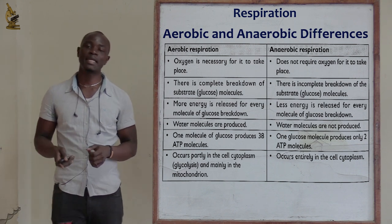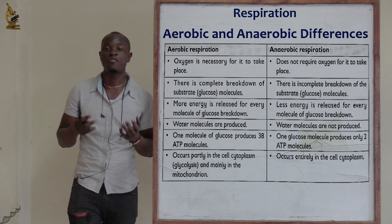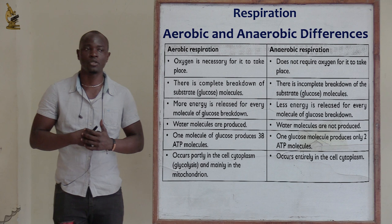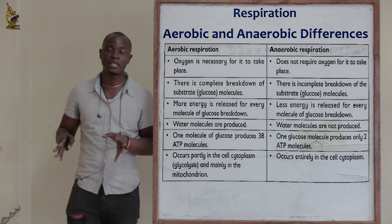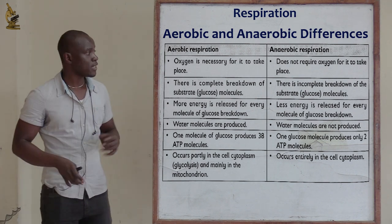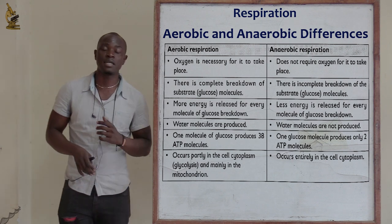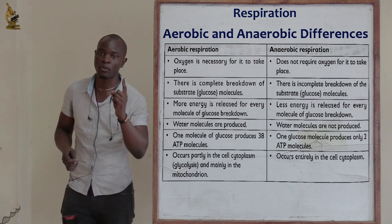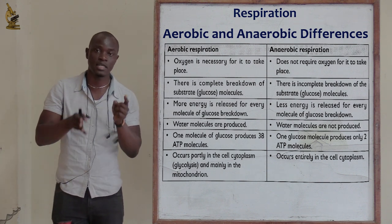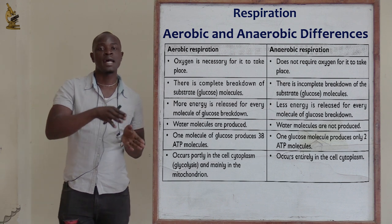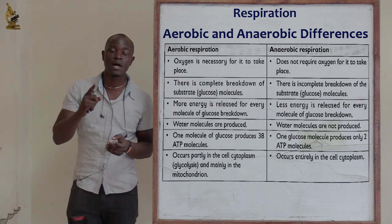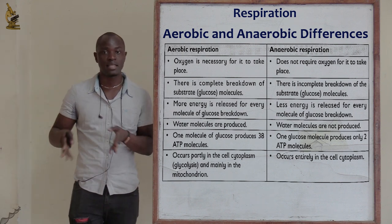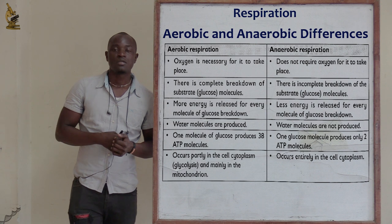In aerobic respiration, more energy is released — 38 ATP molecules. In anaerobic respiration, very low energy is released, only about 2 ATP molecules. So one molecule of glucose produces 38 ATP in aerobic respiration, but only 2 ATP in anaerobic respiration.